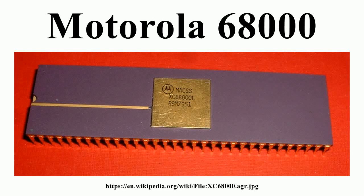The Motorola 68000 is a 16/32-bit CISC microprocessor core designed and marketed by Motorola Semiconductor Products Sector, introduced in 1979 with HMOS technology as the first member of the successful 32-bit M68K family of microprocessors. It is generally software-forward compatible with the rest of the line despite being limited to a 16-bit wide external bus. After 35 years in production, the 68000 architecture is still in use.